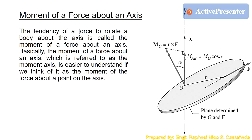Our next topic will be moment of a force about an axis. Make sure you already have a background for moment of a force about a point. The tendency of a force to rotate a body about an axis is called the moment of a force about an axis. This is easier to understand if we think of it as the moment of a force about a point on the axis, which is point O on axis AB in this figure.